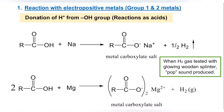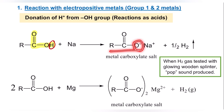Let's start with the reaction with electropositive metals — Group 1 and Group 2 metals. This is where your carboxylic acid is going to act as an acid and donate H⁺ from the OH group. If you realize, you've got the carboxyl group — I'm going to donate this hydrogen to become H⁺. Let's say we have two molecules of carboxylic acid in one container reacting with sodium metal. You will form a carboxylate salt, and the O⁻ will attract Na⁺ from the metal. The proton released will combine with another proton to form H₂ gas.